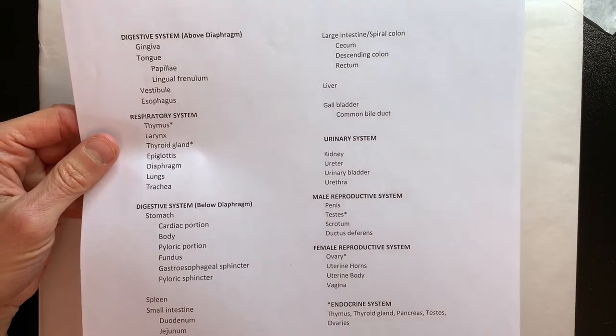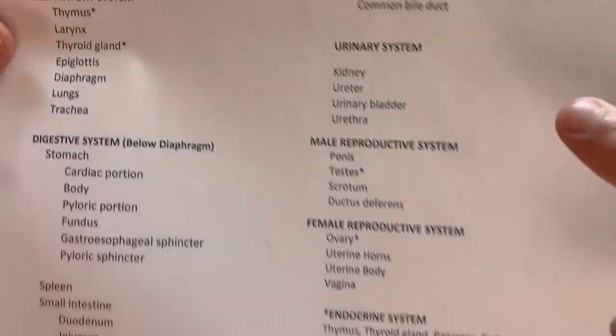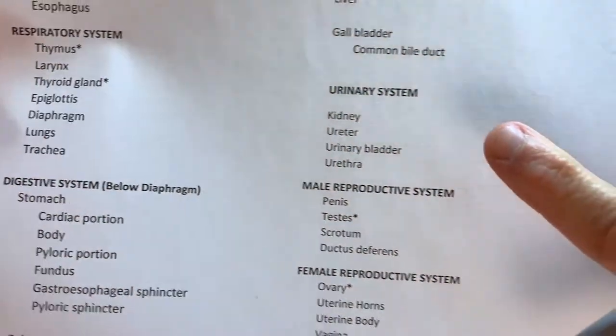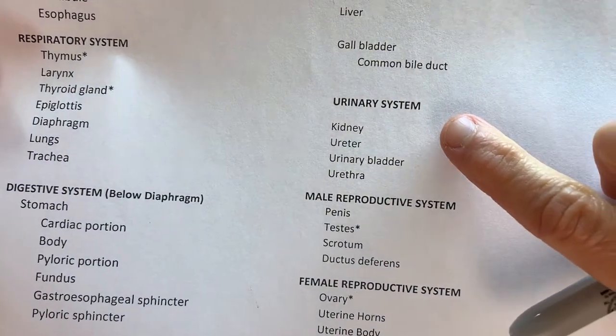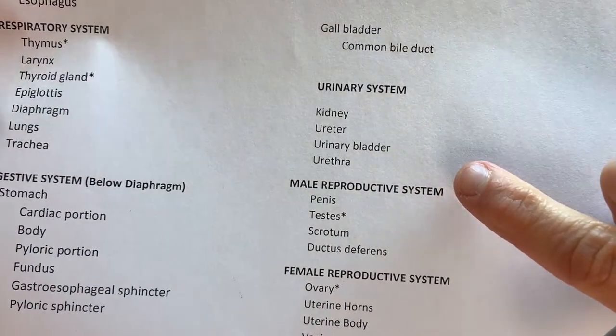Let's make a video about the urinary system. The urinary system we're covering is on this list here: kidney, ureter, urinary bladder, and urethra.